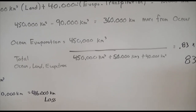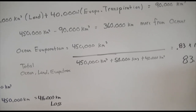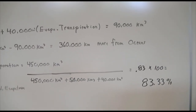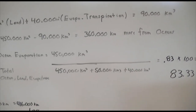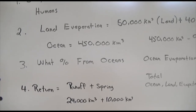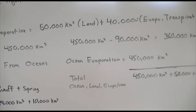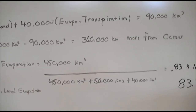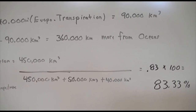Evapotranspiration is moisture emitted by animals that sweat and by plants. Taking the total evaporation over land of 50,000 cubic kilometers and adding evapotranspiration gives a total of 90,000 cubic kilometers evaporating over land. Oceans evaporate 450,000 cubic kilometers. Subtracting 90,000 from 450,000 means 360,000 more cubic kilometers of water evaporate from the oceans than the land.